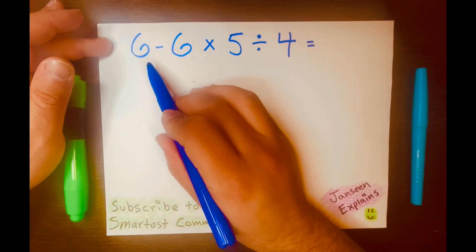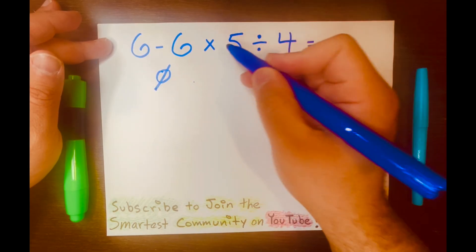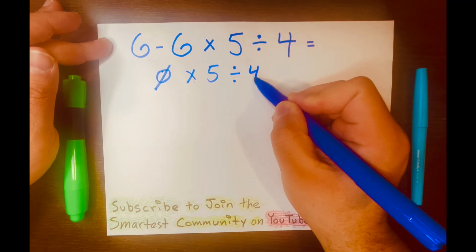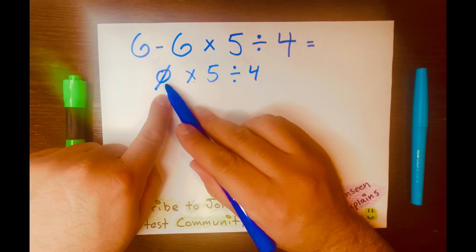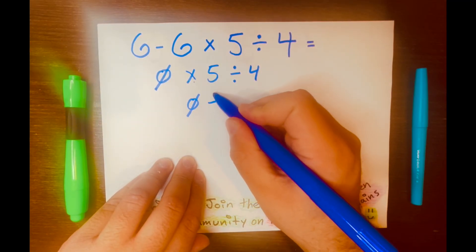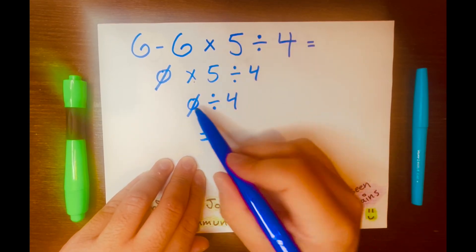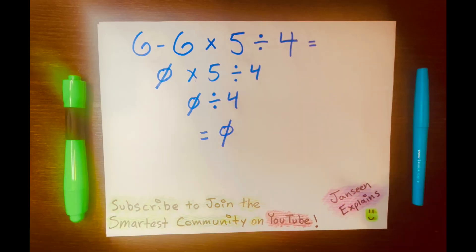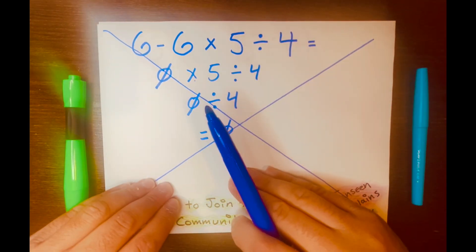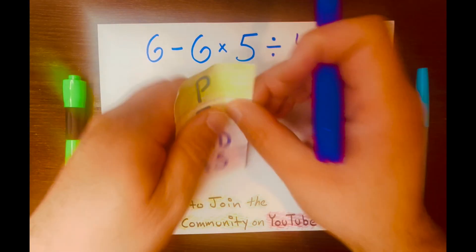Hi, everyone. Some people will subtract 6 minus 6, which is 0, so they'll write 0 times 5 divided by 4. Then, they'll multiply 0 times 5 equals 0, bring down the division symbol and the 4. And the answer is 0 divided by 4 is 0. And this is wrong! Let me show you how to solve this math problem correctly using PEMDAS.